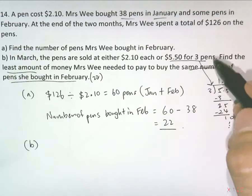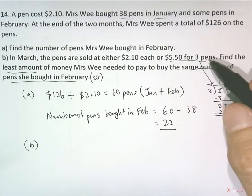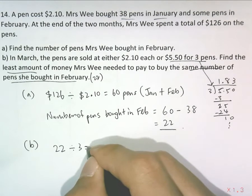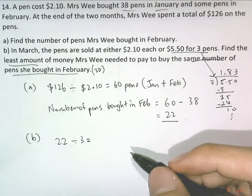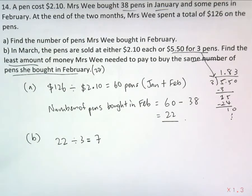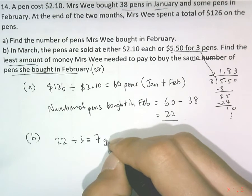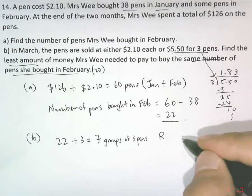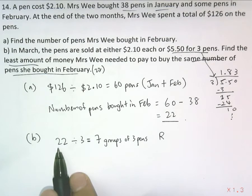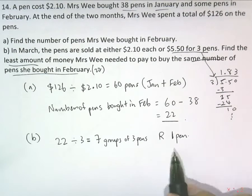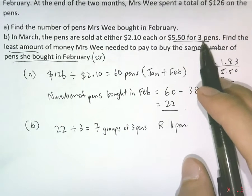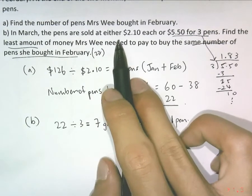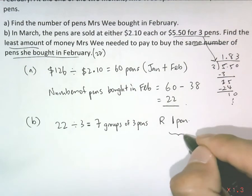To find the least amount, follow as many groups of three pens as possible. To buy 22 pens, divide 22 by three — because this is the cheaper way. That gives seven groups of three pens, since seven times three is 21, with one pen remaining. This remaining one pen cannot be bought in a group, so it will have to cost $2.10.